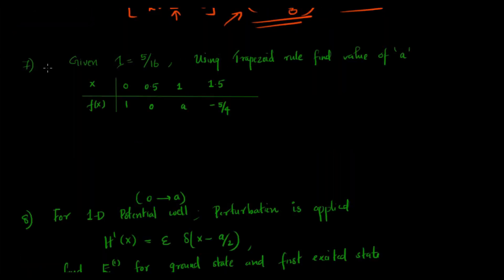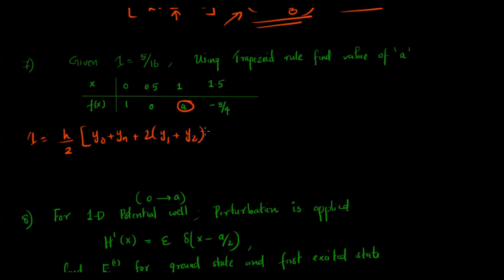The next question is from mathematical physics: using the trapezoid rule, the integral I = (h/2)[y0 + yn + 2(y1 + y2)]. After solving this with the given values, we get a = 3/4.